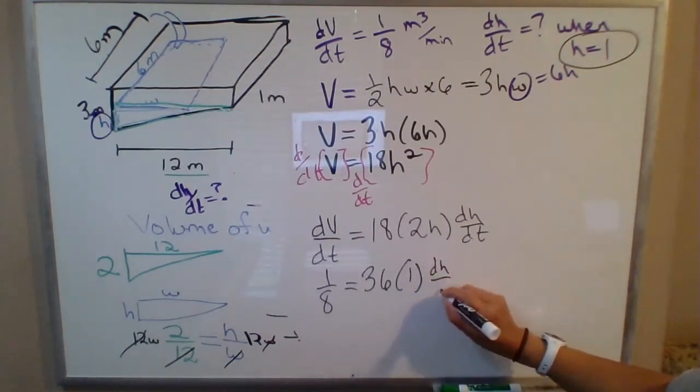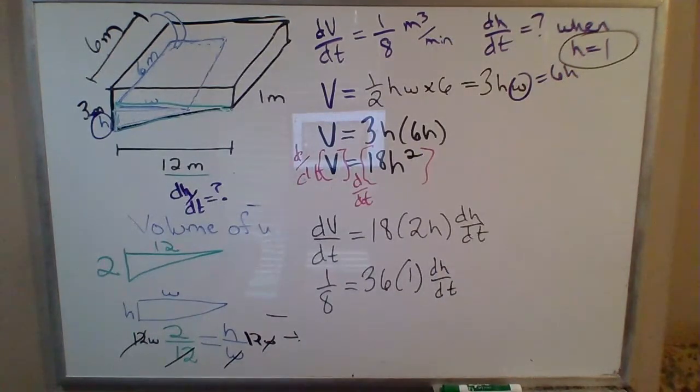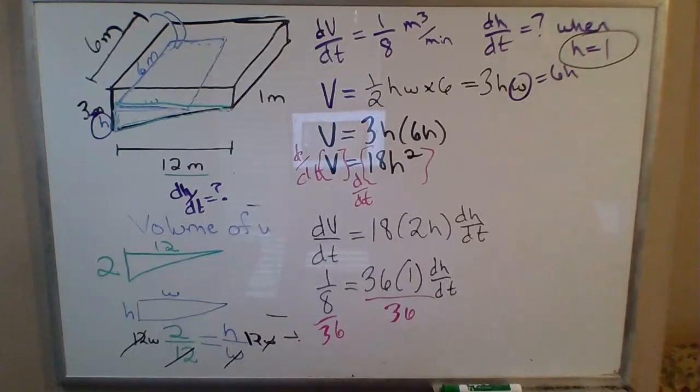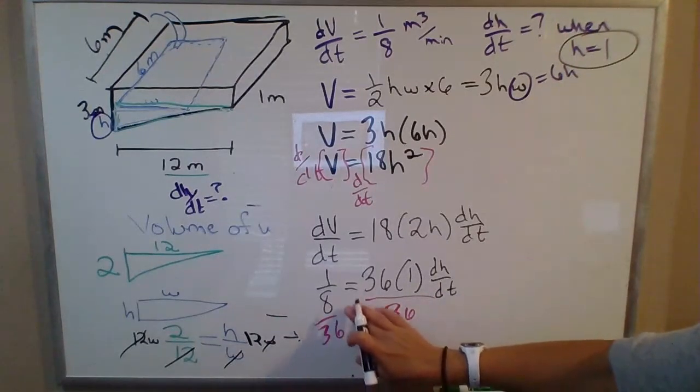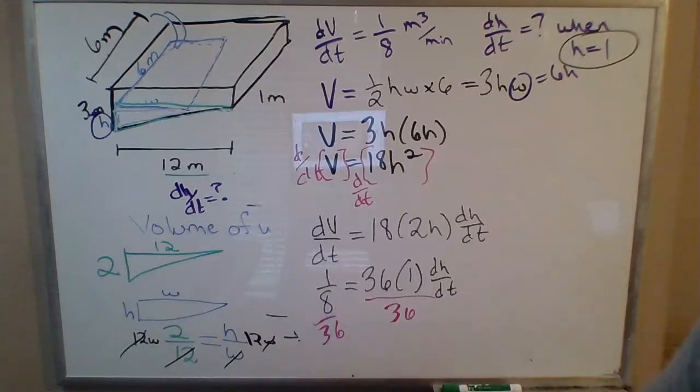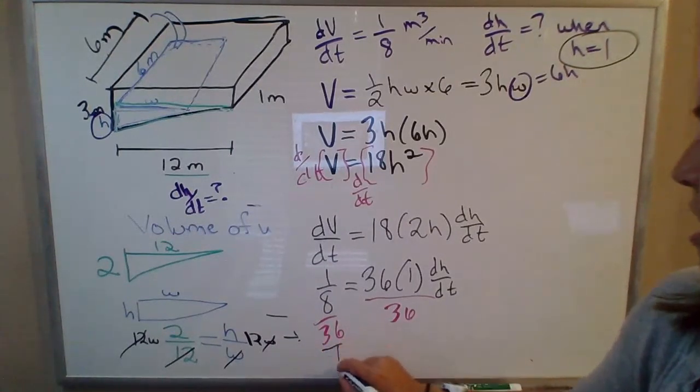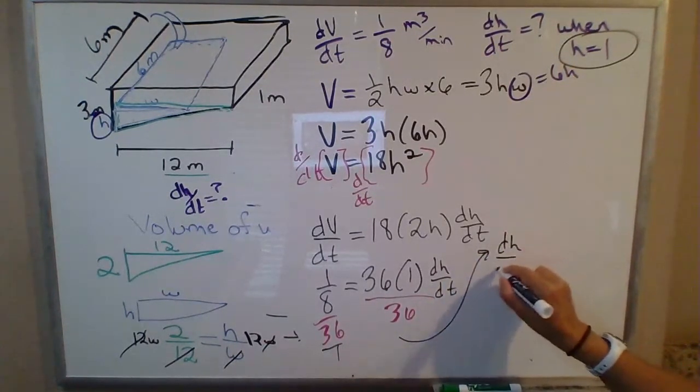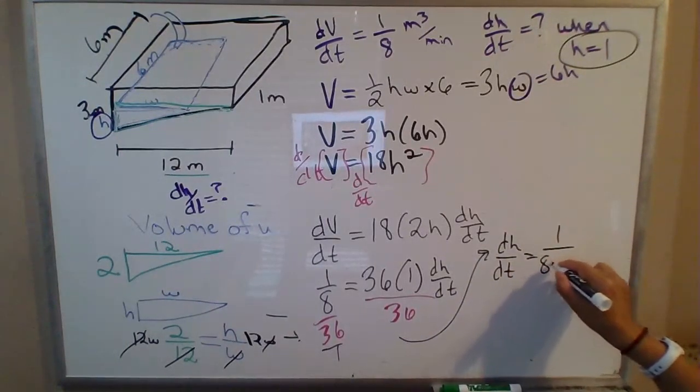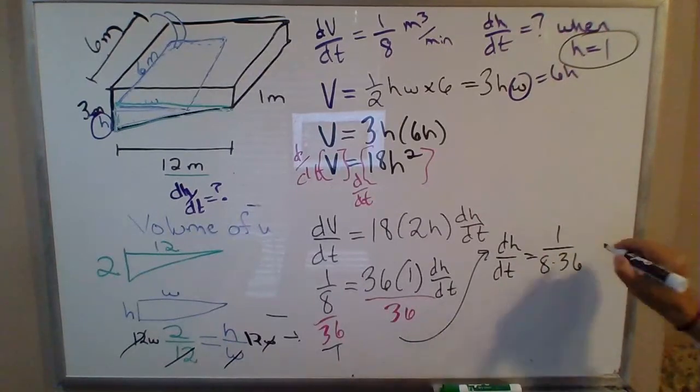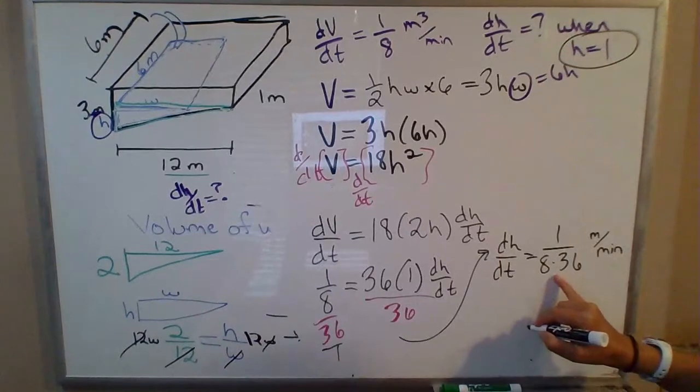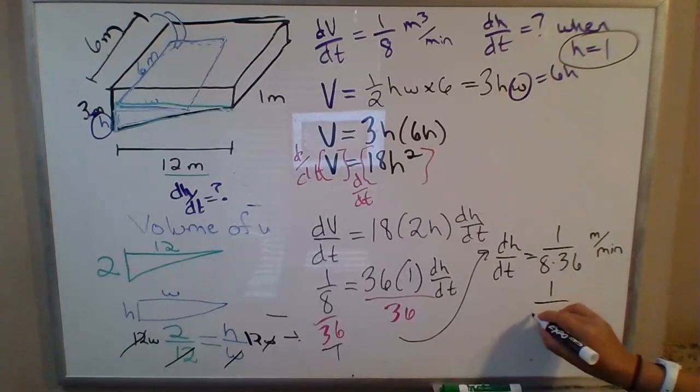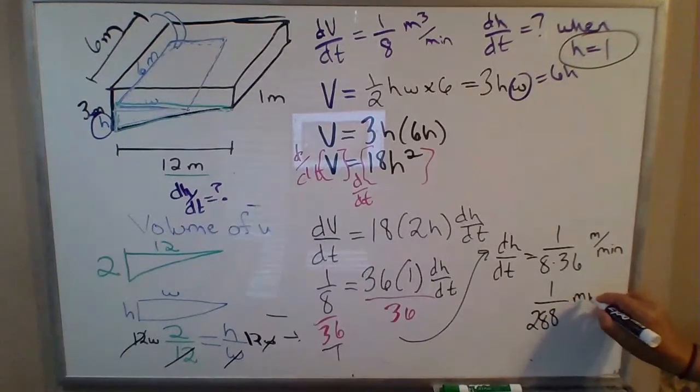And then times dh/dt, which is what we're trying to solve for. Well, then this is actually straightforward. So we just divide by 36 on both sides. And that'll give you your rate of change for h. So this will be, when you divide by 36, you're actually going to multiply in the denominator by 36. Because you can think of that as, if we're dividing by 36 over 1, then dh/dt is 1 over 8 times 36. This will be meters per minute. Which, let's see, so that would be 240 plus 48. So 1 over 288, I believe. You can check my math. But it would be meters per minute.